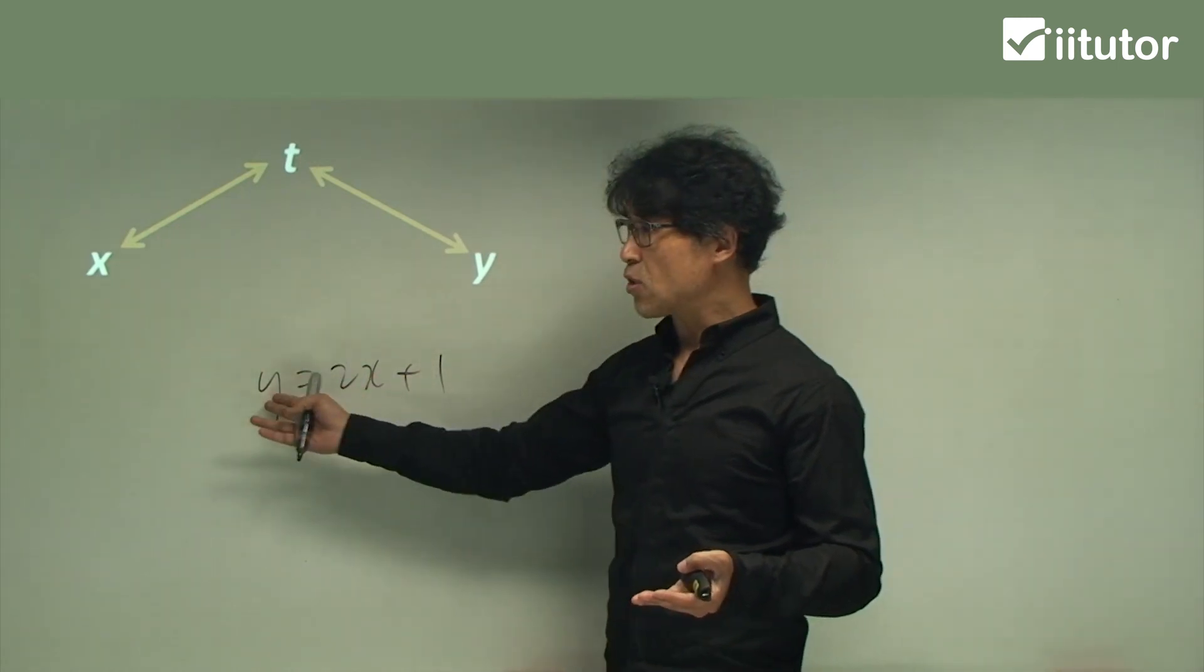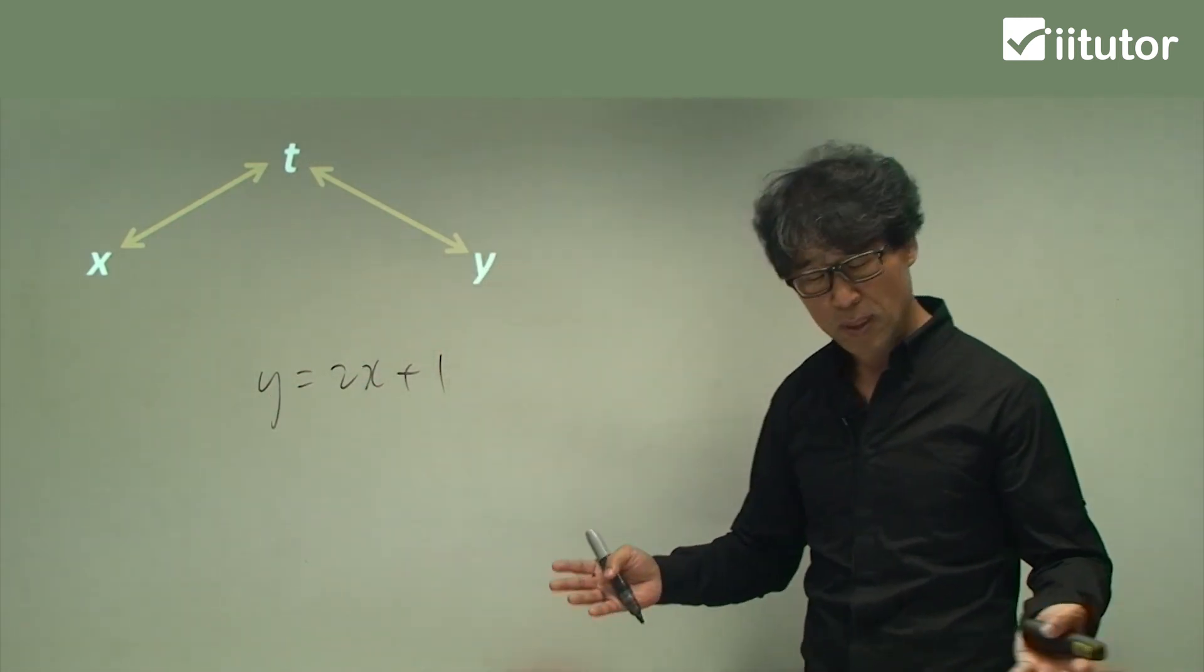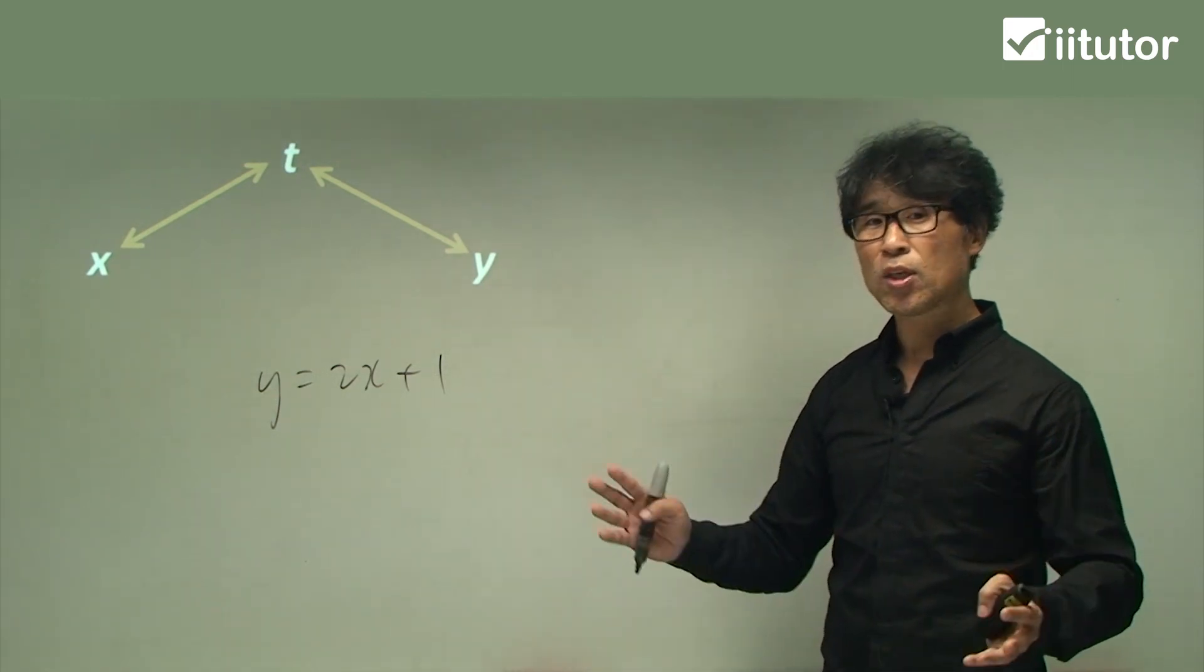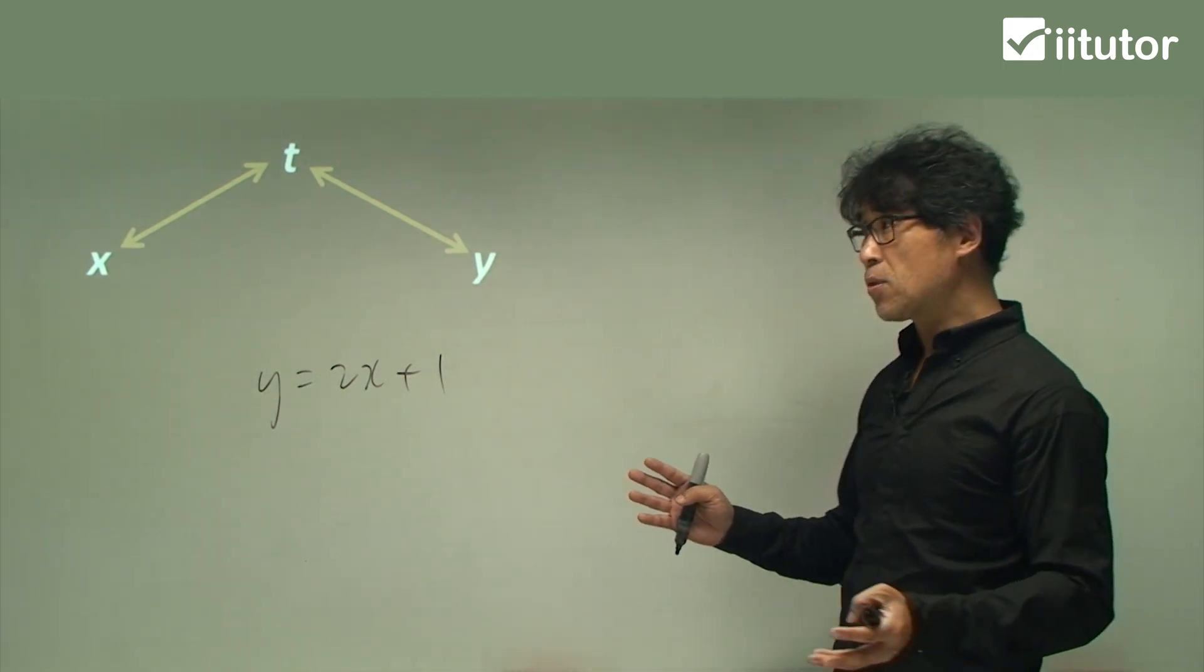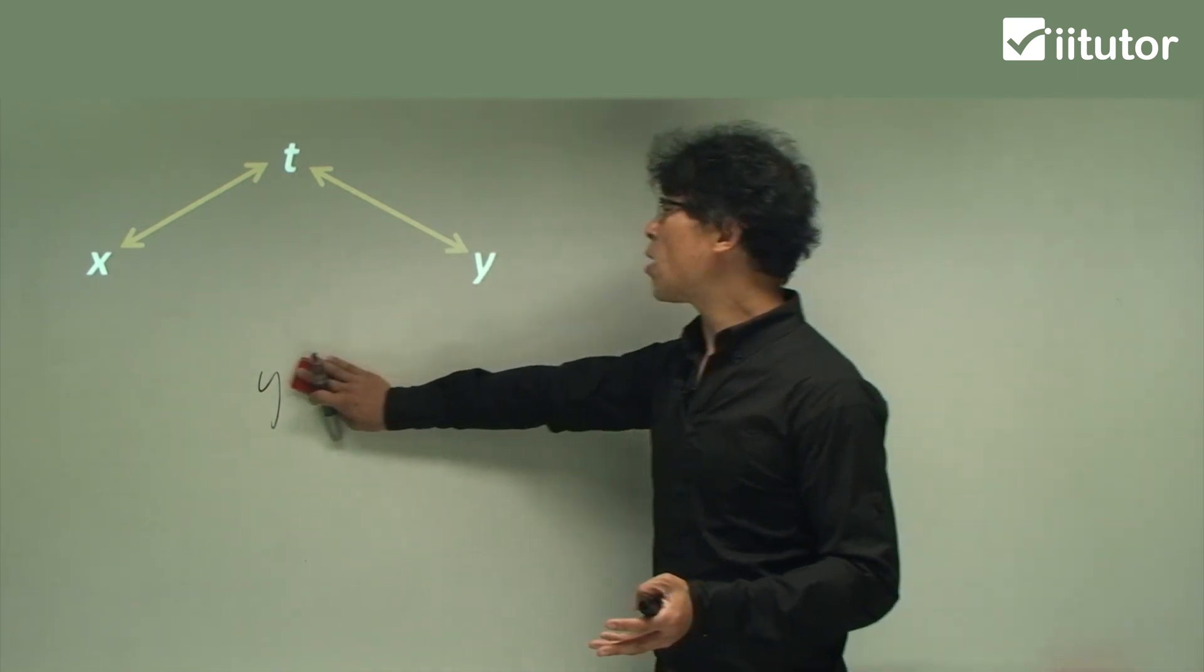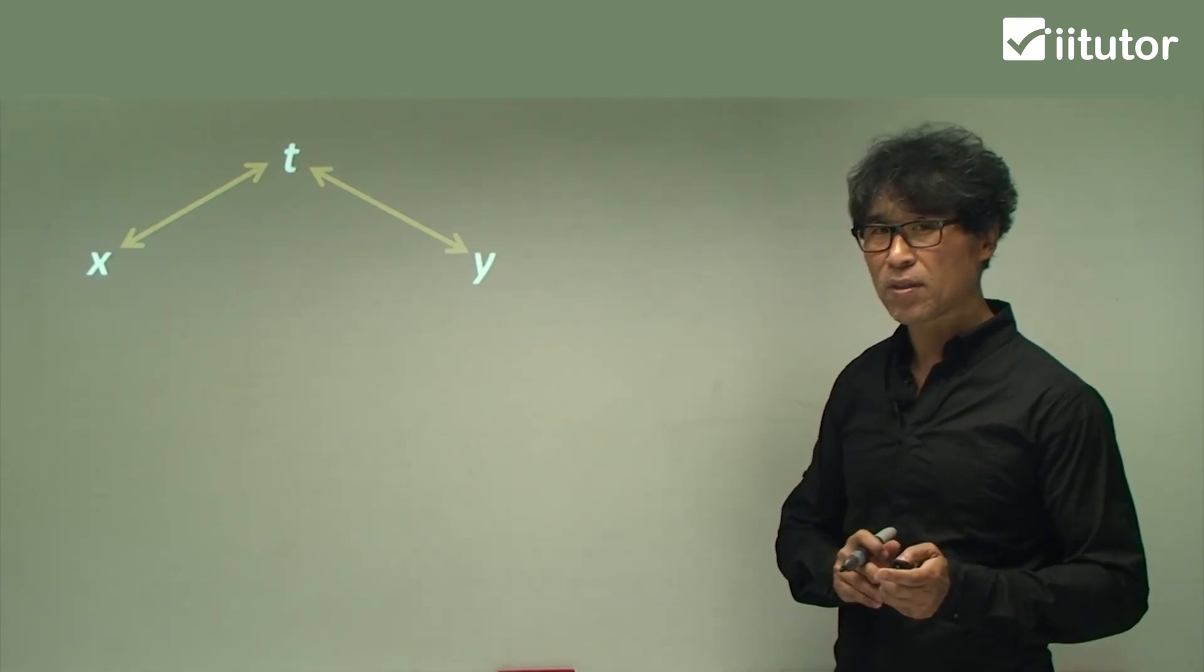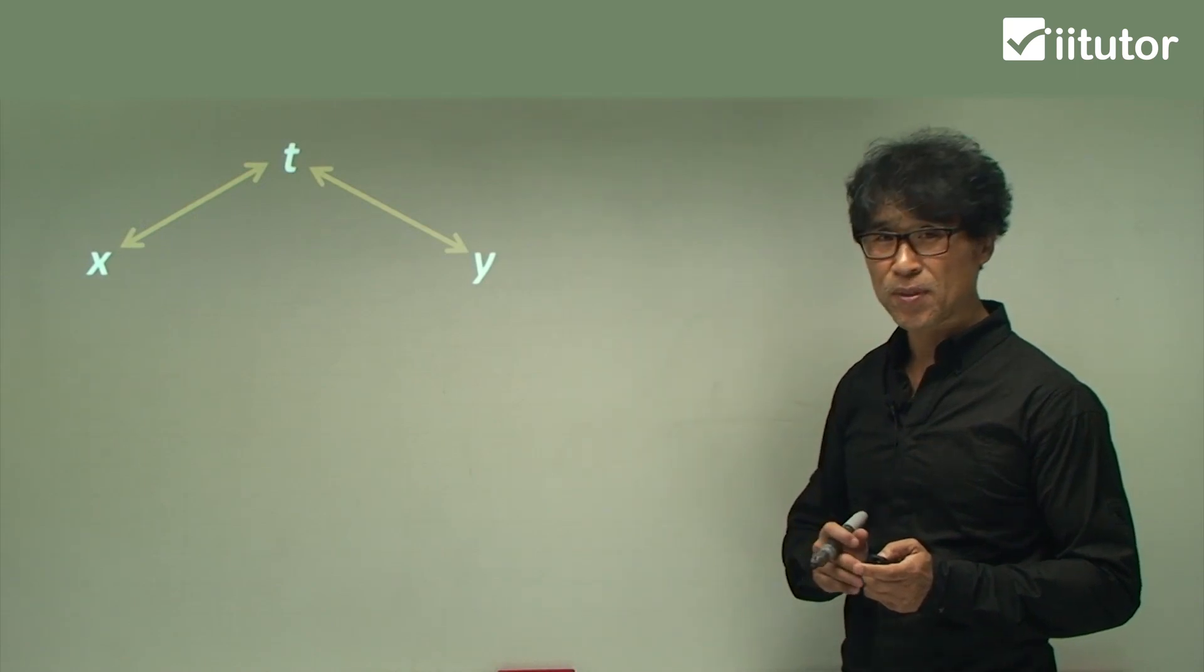If the equation has only two pronumerals, x and y or m and n, a and b, that is Cartesian equation. So particularly for this lesson, I am going to cover how to make the Cartesian equations from the parametric equations. It's not too difficult, but I will show you how to do, guys.